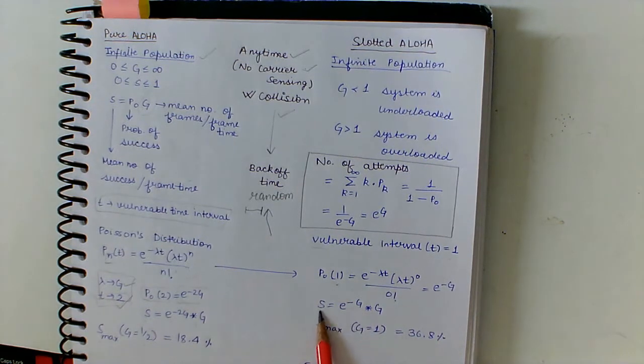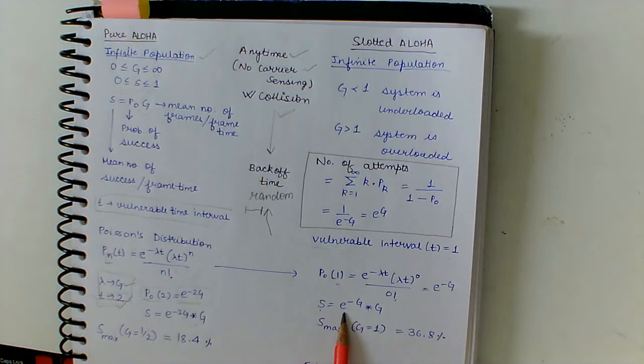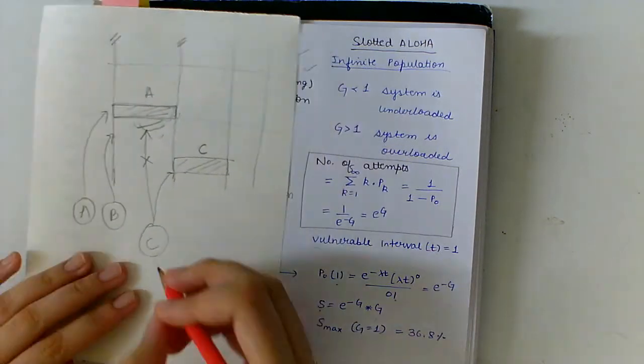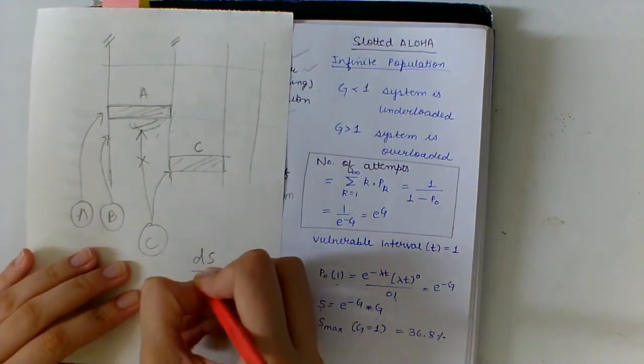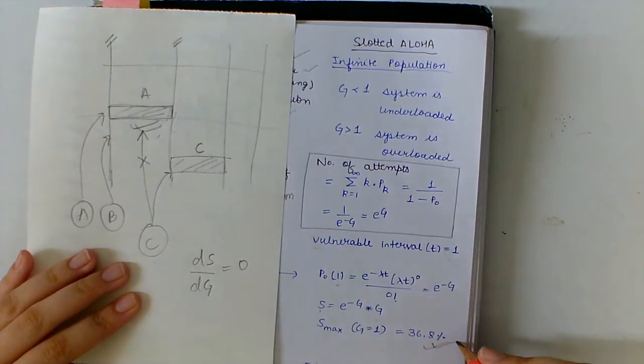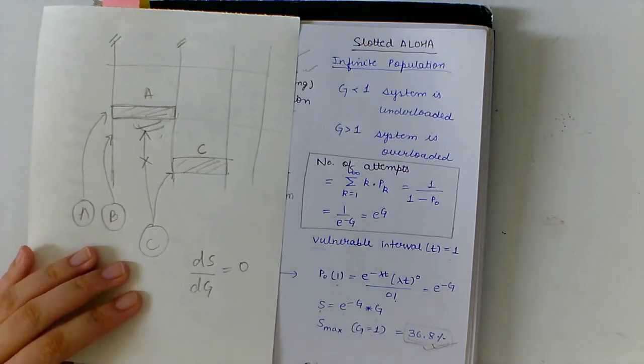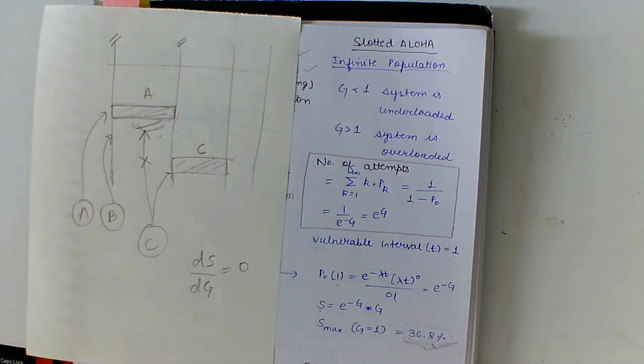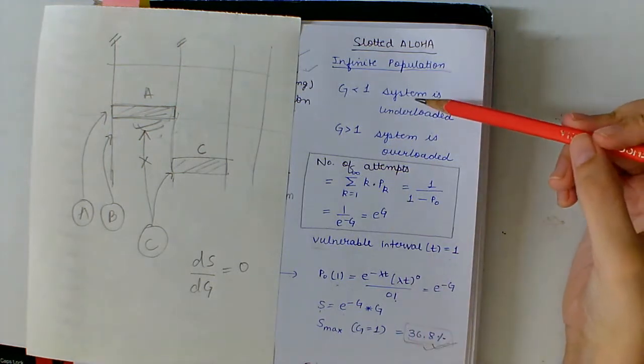So we just have to wait for the next time. We can write S equal to e to the power minus G times G, and we do the same thing by doing dS/dG equal to 0 to calculate the value of Smax, that is 36.8%.